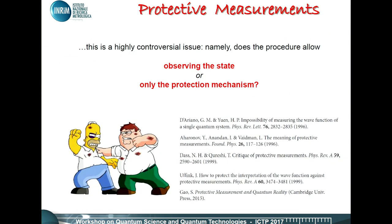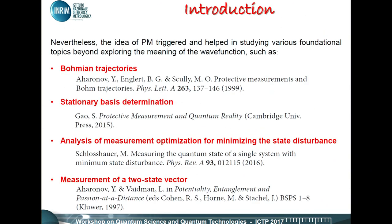In another seminal paper, always by Aronov and Weidman, they proposed a paradigm called Protective Measurement, which is very weird. In some sense, they proposed that it is possible to find the expectation value of an observable by measuring only one single particle. This is very controversial with respect to standard quantum mechanics, and a controversial debate was raised: with this procedure, do we observe the state or only the protection mechanism? Up to now there is no answer — the fight is still open. Anyway, from an experimental point of view, we decided to investigate this approach more deeply.